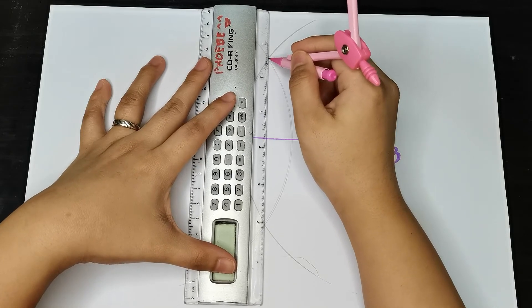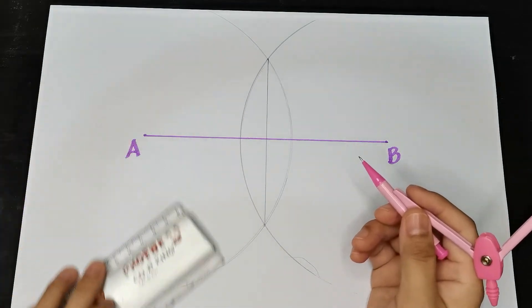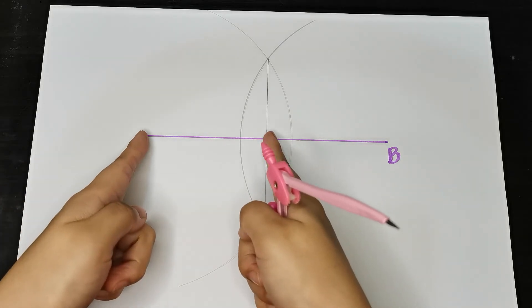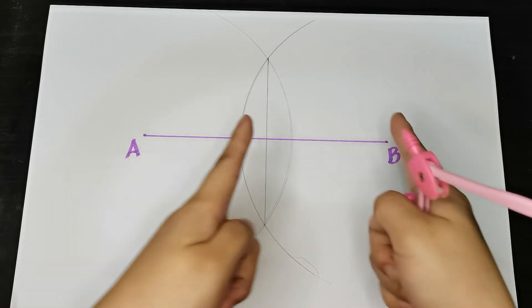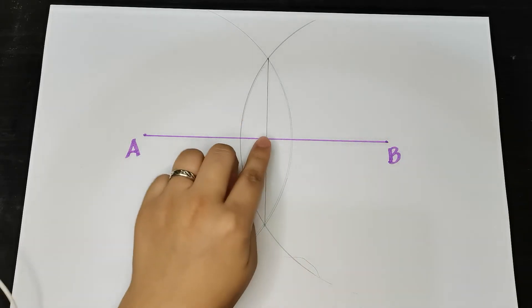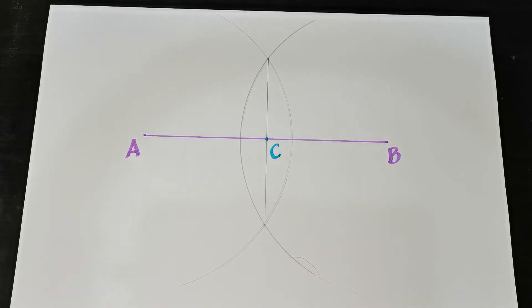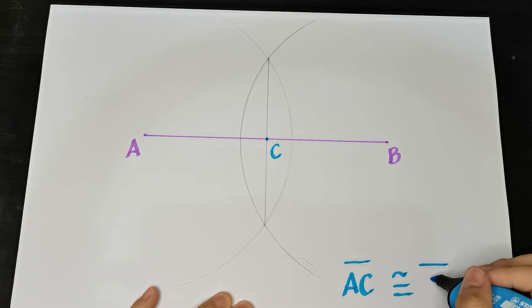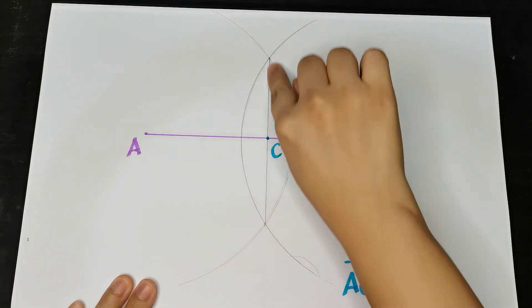Connect those two points by drawing a line segment. There you go, you're all done. You now divided the line segment equally into two parts. This line segment is now divided into two congruent parts. Let's name this point of intersection as point C. We can now say that line segment AC is congruent to line segment CB. That is how you construct a segment bisector.